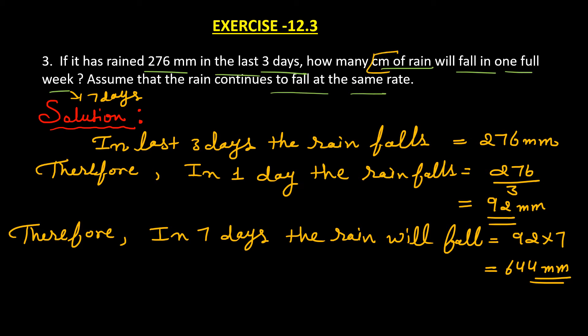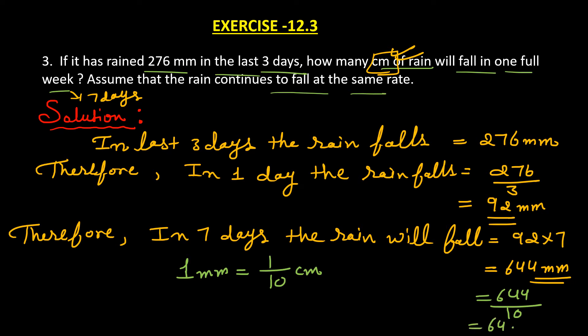According to the question, humein yeh value centimeter mein find out karni hai. As you know, 1 mm is equal to 1/10 cm. So agar hum 644 mm ko centimeter mein change karenge, we should divide this by 10: 644 divided by 10, which is equal to 64.4 cm.